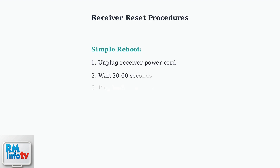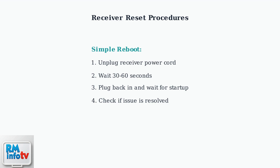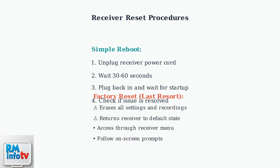If cable and line of sight checks don't resolve the issue, try a simple receiver reboot. This basic troubleshooting step can resolve many temporary glitches and communication errors. If a simple reboot doesn't work, you may need to perform a factory reset. However, be aware that this will erase all your custom settings, recordings, and preferences, returning the receiver to its original state.